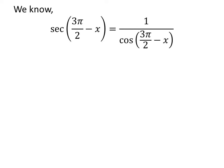As we know, secant of theta equals 1 over cosine of theta. So secant of 3 pi over 2 minus x equals 1 over cosine of 3 pi over 2 minus x.